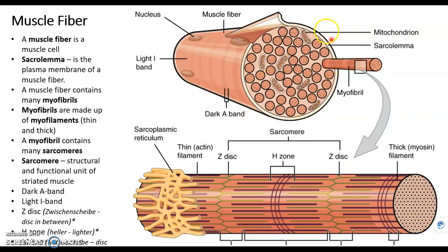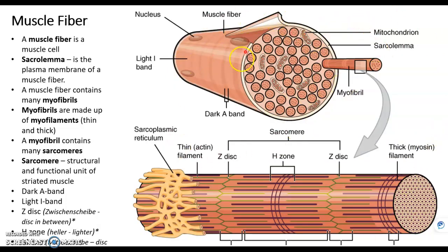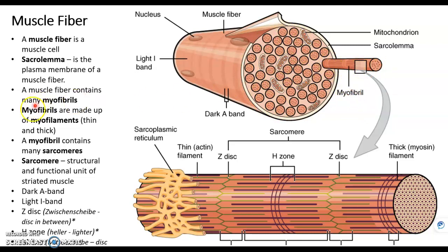Now we are looking at just one muscle fiber — one muscle cell. Its plasma membrane is called the sarcolemma. In this chapter we'll see a lot of sarco- and myo- prefixes, which have to do with muscle. Muscle cells are excitable, and that's where the lemma comes from — a sarcolemma has a plasma membrane that allows electrical impulses to flow through it.